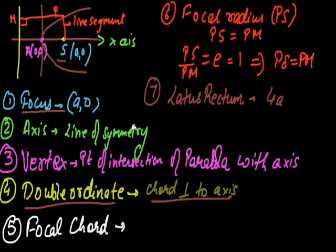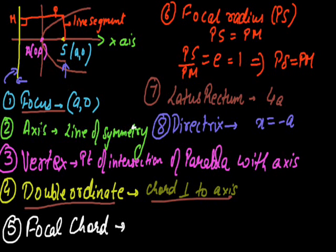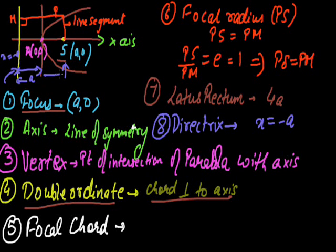Coming back to our original figure — one more thing you can notice: the directrix, this yellow colored line, has equation x equals minus a. The distance between the directrix and the focus is the semi-latus rectum, which equals 2a. It is easy to prove: the directrix is at distance a from the tangent at the vertex, and the focus S is also at distance a from the vertex. So a plus a gives us 2a — hence the distance between the focus and the directrix is the semi-latus rectum, 2a.